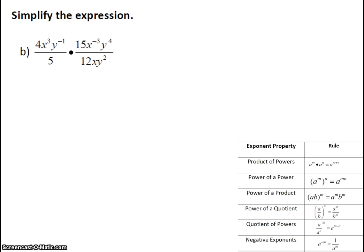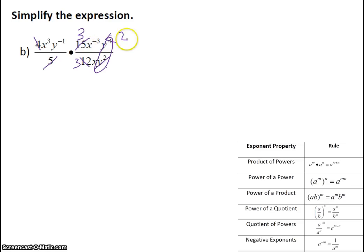For this next problem, we're going to continue to simplify. There are lots of approaches we can take. One approach is simplifying by flip-flopping the negatives. Another approach is simplifying the problem as much as you can first. For example, 5 and 15 can get simplified to 3, and 4 goes into 12 three times. You can also look at your y's: if you have y to the 4th over y squared, on the top you have 4 y's written out and the bottom you have 2 y's. So y squared cancels with 2 of the y's on top, and I end up with y squared.